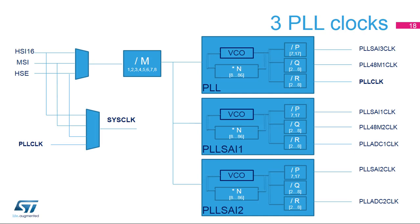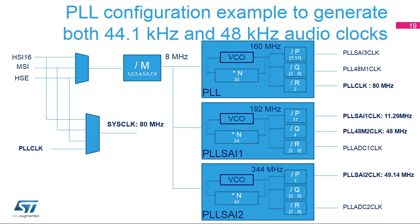STM32L4 devices embed three phase-locked loops, each with three independent outputs. The input clock of the PLL can be selected between HSI-16, MSI, and HSE. The main PLL can provide the system clock, and the different PLL outputs can be used for the two serial audio interfaces, ADC interface, USB, random number generator, and SDMMC peripherals. Here is a configuration example where the first PLL is configured to generate the 80 MHz system clock. The second PLL, PLL-SAI-1, is used to provide the 11.29 MHz audio clock, used to generate a sample frequency submultiple of 44.1 kHz, and to provide the 48 MHz USB clock. The third PLL, PLL-SAI-2, is used to provide the 49.14 MHz audio clock, used to generate a sample frequency submultiple of 192 kHz.